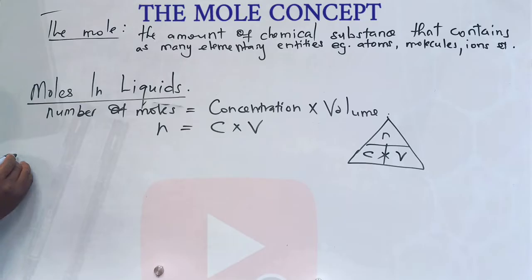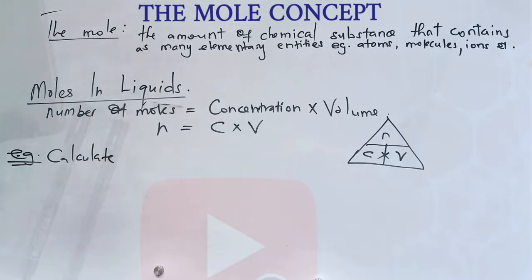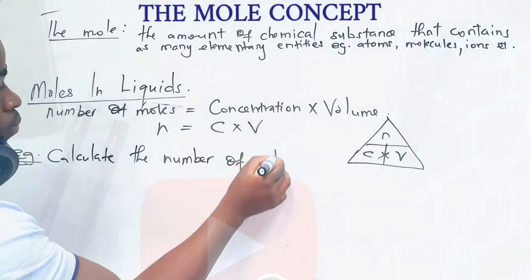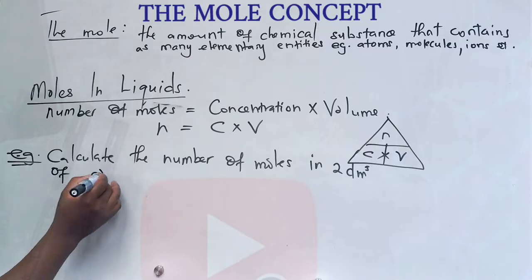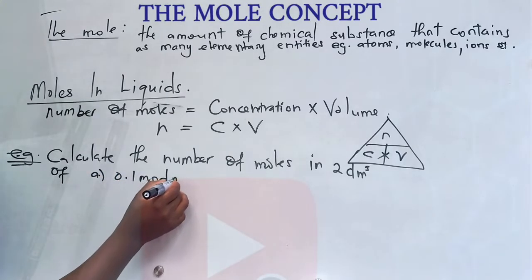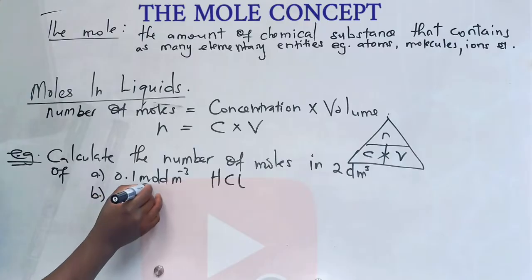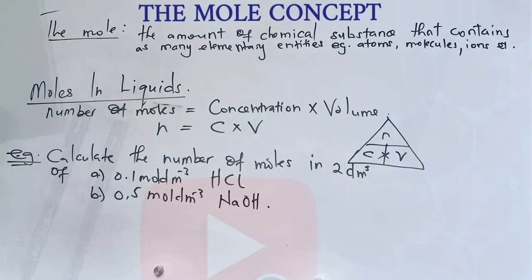Alright, so now let's give an example. Calculate the number of moles in 2 cubic centimeter of A) 0.1 mole per cubic decimeter HCl. So what we need to do here, we use the formula n is equal to CV. So, let's see how we can do it.